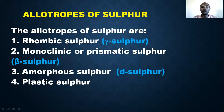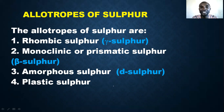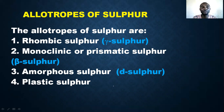Sulfur has allotropes. There are four allotropes of sulfur: number one is rhombic sulfur, also called alpha sulfur; number two is monoclinic or prismatic sulfur; number three is amorphous sulfur; and number four is plastic sulfur. We will explain them one after the other.